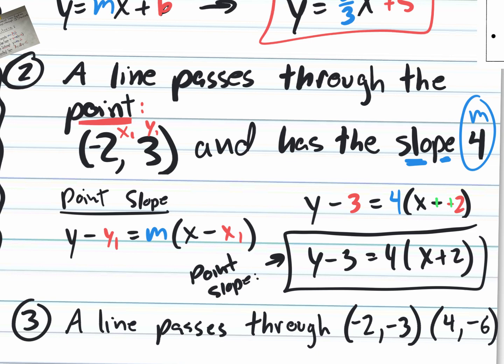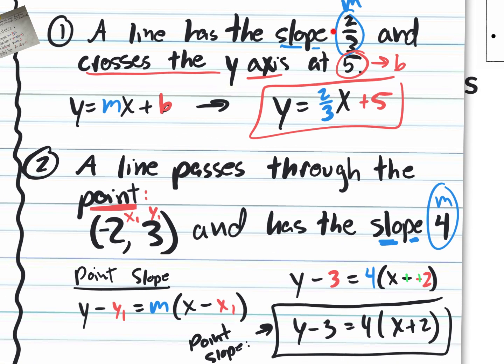Even if they asked for standard form, you'd still start with point-slope when given a point and a slope. Get that equation first, then convert to the requested form — distributing to remove parentheses and rearranging. The information they give you tells you what form to start with: slope and y-intercept → slope-intercept; point and slope → point-slope.